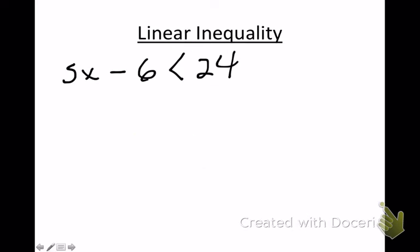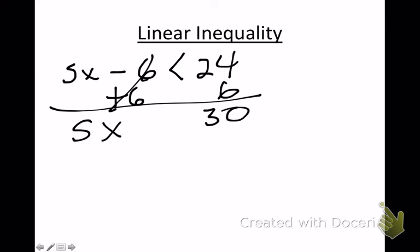I'm going to work another one for you here. We've got 5x minus 6 is less than 24. You're going to solve it exactly like you would an equation. I'm going to get rid of this minus 6 with a plus 6. Add a 6 to this side. 24 plus 6 is 30.